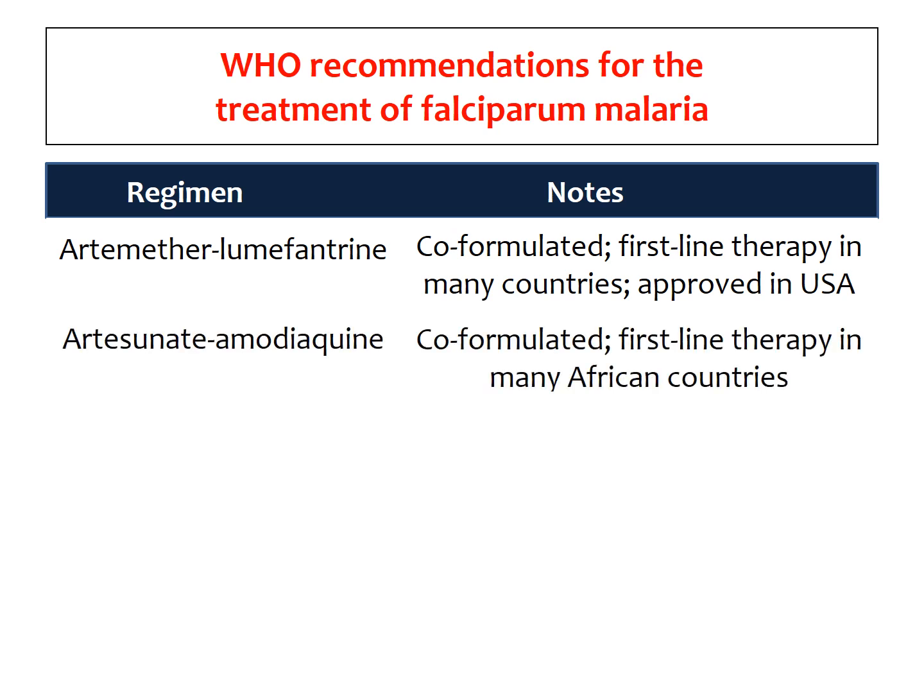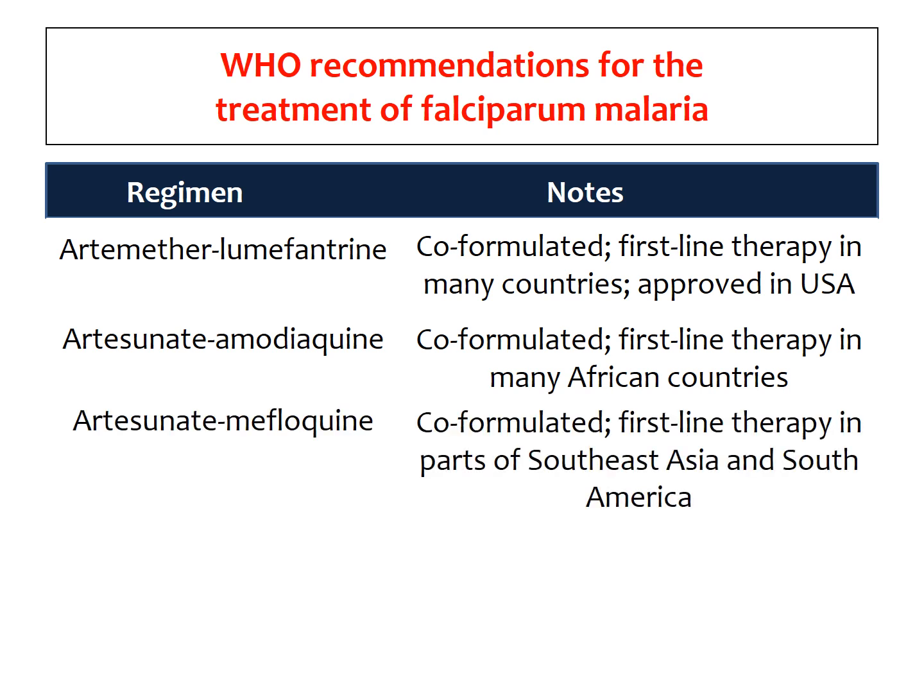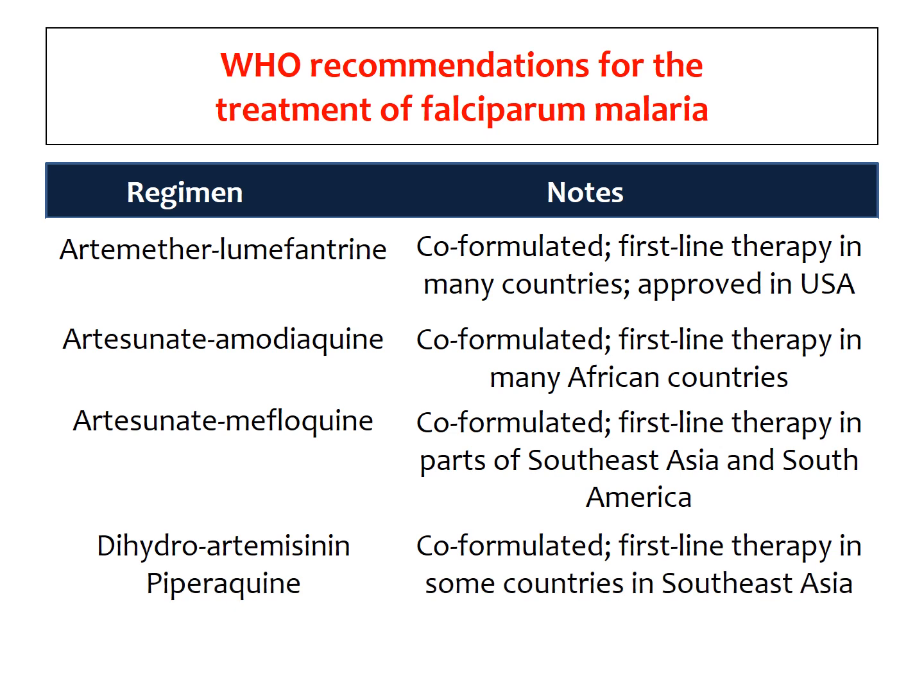The second combination is artesunate with amodiaquine, which is again very useful in falciparum malarial infection, especially in many African countries. The third combination is artesunate with mefloquine, especially useful as a first-line therapy in parts of Southeast Asia and South America. The fourth combination is dihydroartemisinin with piperaquine, especially first-line therapy for falciparum malarial infection in countries other than parts of Southeast Asian countries.